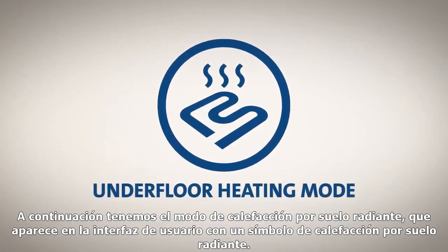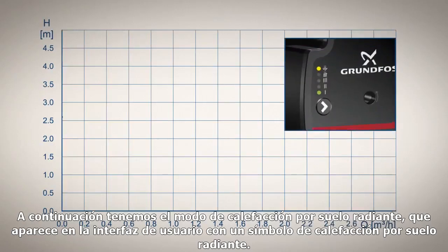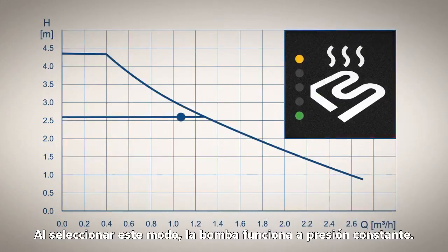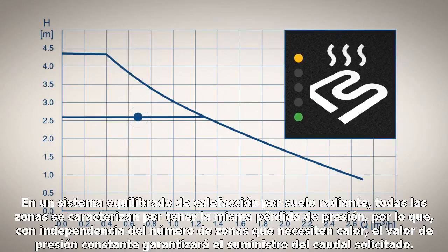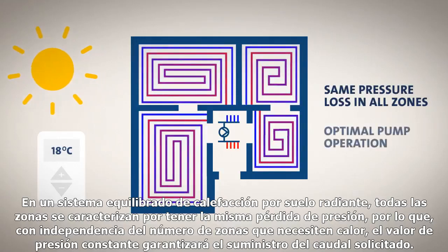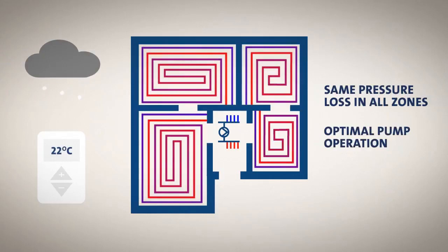Next up is the underfloor heating mode, indicated by an underfloor heating symbol on the user interface. When set to underfloor heating mode, the pump operates at a constant pressure. In a balanced underfloor heating system, all zones are characterized by the same pressure loss, so no matter how many zones require heat, the constant pressure setting will secure that the required flow is delivered. The pump will also find the most optimal pump operation for the underfloor heating system.